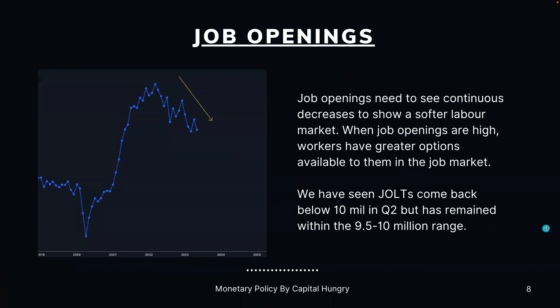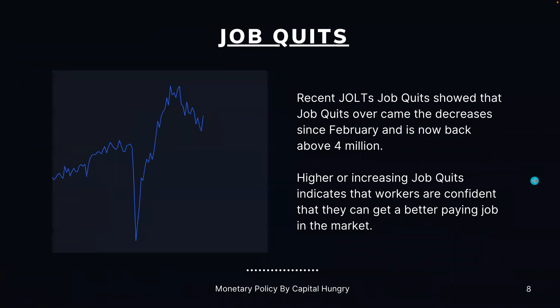Job openings need to see continuous decreases to show a softer labor market. When job openings are high, workers have greater options available to them. JOLTS job openings came back below 10 million in Q2, but has remained within the 9.5 to 10 million range, indicating a still tight labor market. Meanwhile, JOLTS job quits overcame the decreases since February and are now back above 4 million. Higher job quits indicate that workers are confident they can get a better paying job, forecasting strong worker confidence and a still tight labor market.